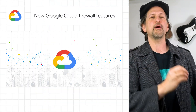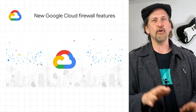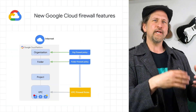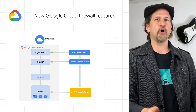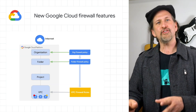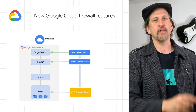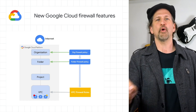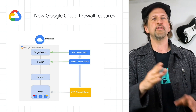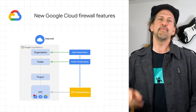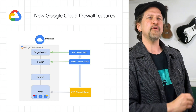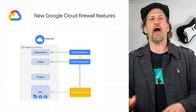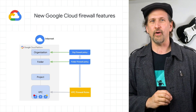Google Cloud's hierarchical firewalls are generally available, offering centralized control at the organization and folder level, while safely delegating more granular control within a project to the project owner. Check out the post and read our documentation to learn more about hierarchical firewalls.